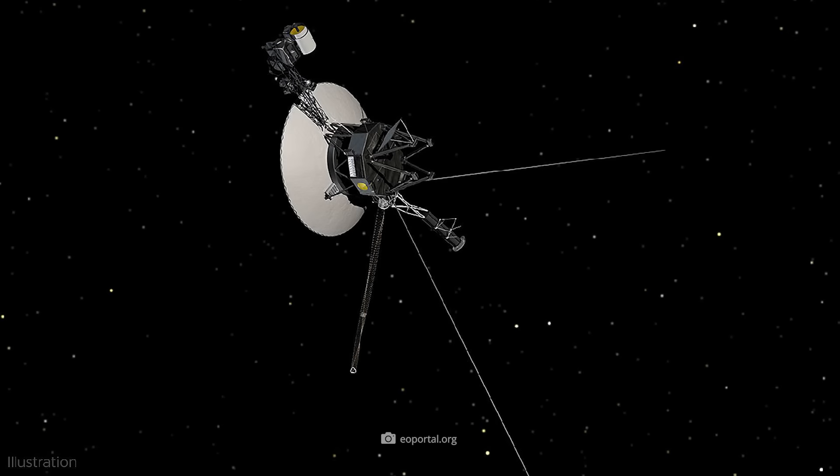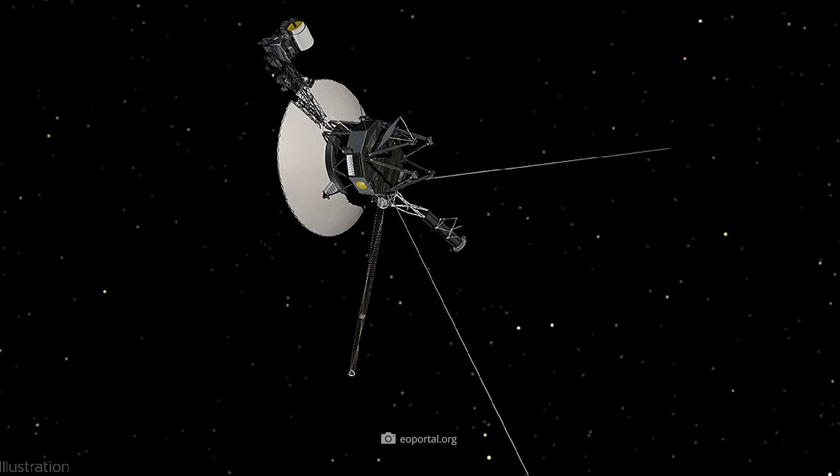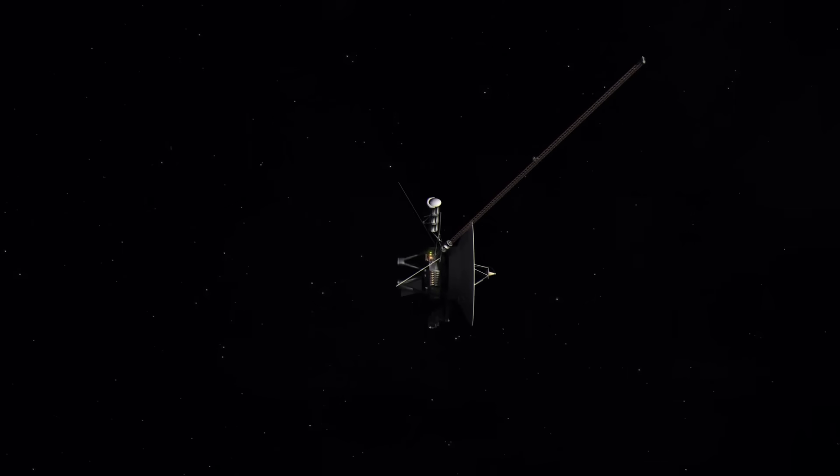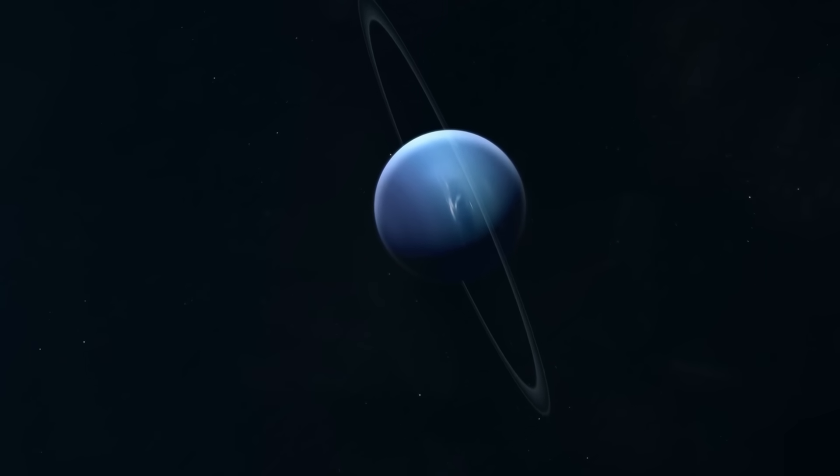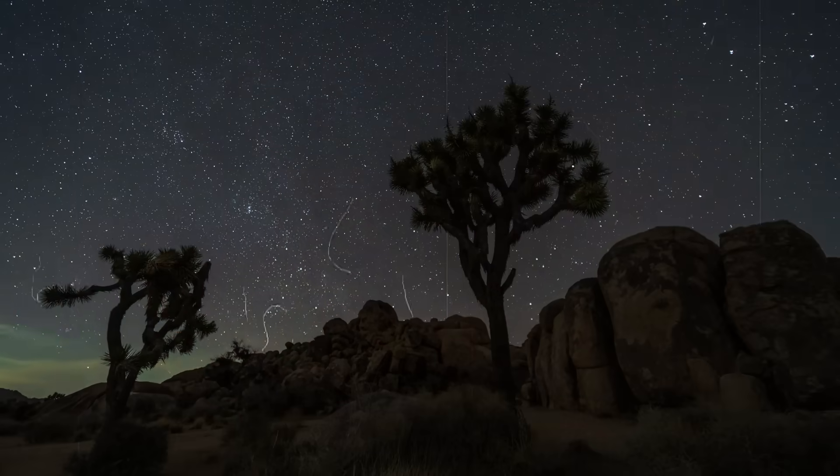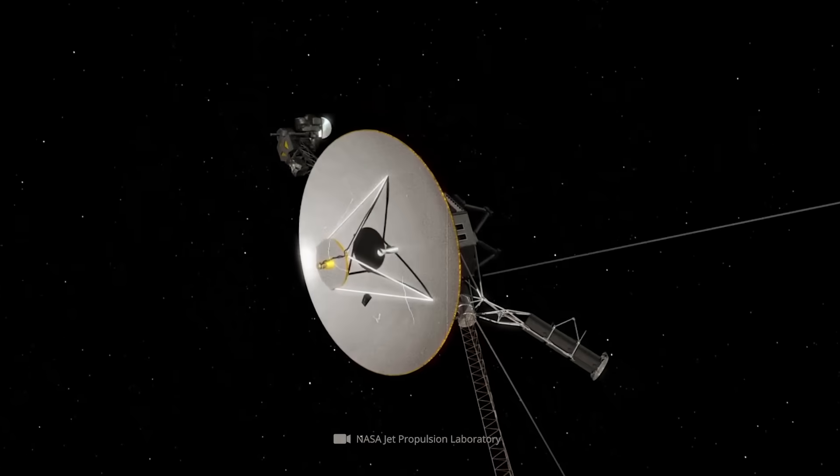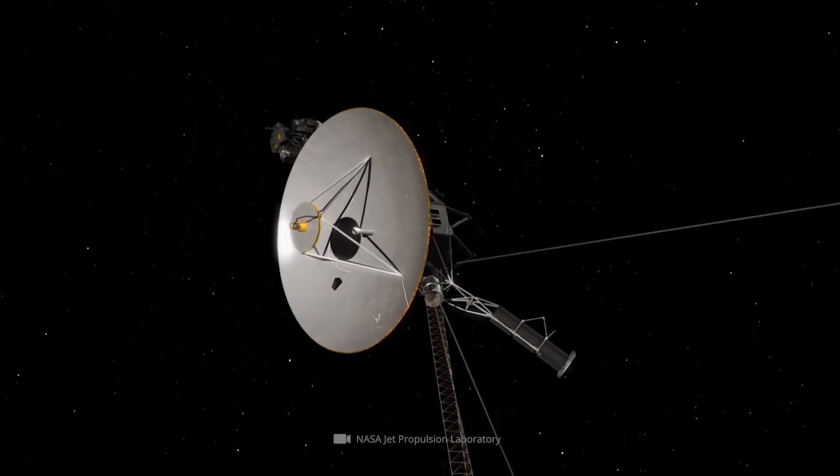Voyager 2 set out on its iconic journey in 1977. Initially, the outer planets of the solar system were the target, but now the probe is in the interstellar medium. More than 45 years after its launch, the probe is still sending data to Earth every day, and these reveal more and more astonishing things.